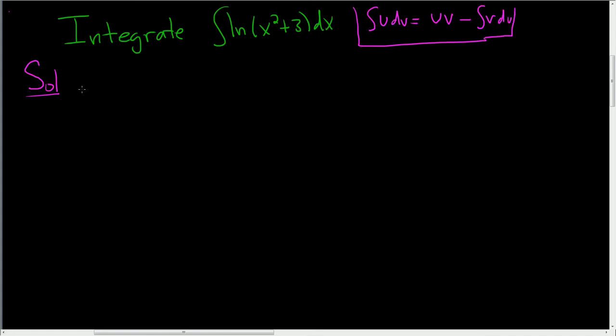Okay, so in this case, it looks like u is going to have to be the natural log of x squared plus 3. And dv is going to have to be dx, right? Because if you set dv equal to this, then you have to integrate this. But that's what the original question is, so that doesn't seem like it would work.